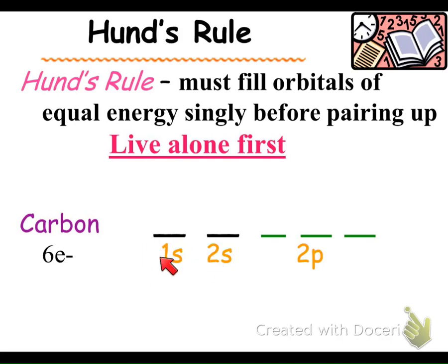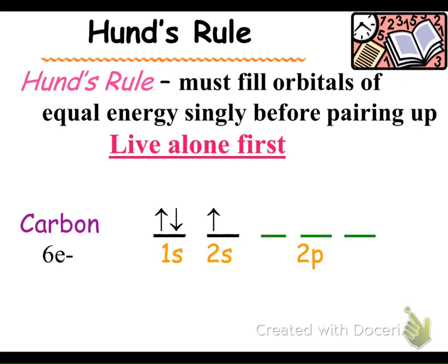On level one of our apartment building, there's only one orbital option, so you have to share the room. We draw an up arrow and a down arrow to represent the two electron spins — they share the twin bed by sleeping head to foot. In level two, the same applies for the single s orbital. But in the 2p level, we have three orbital possibilities — three twin bed options.